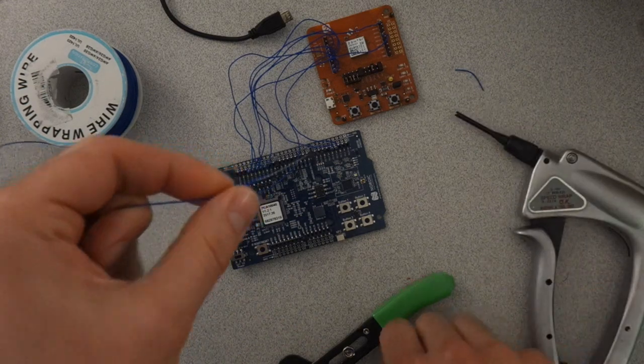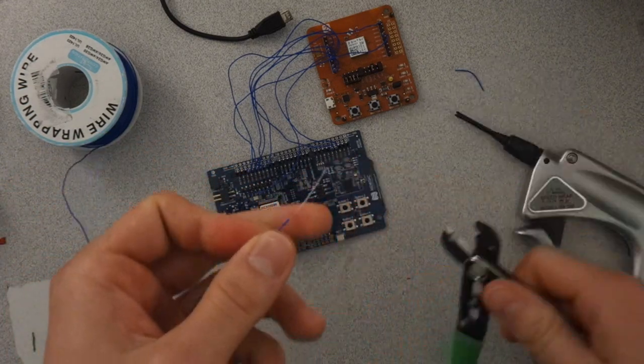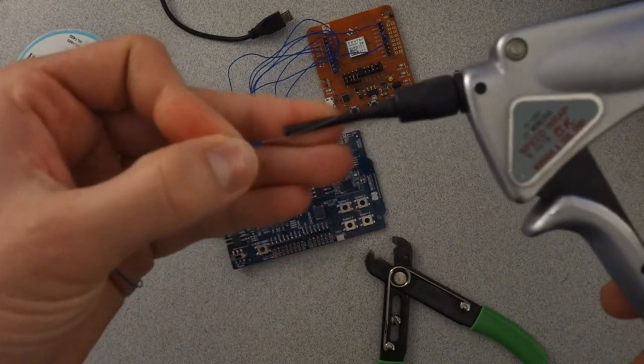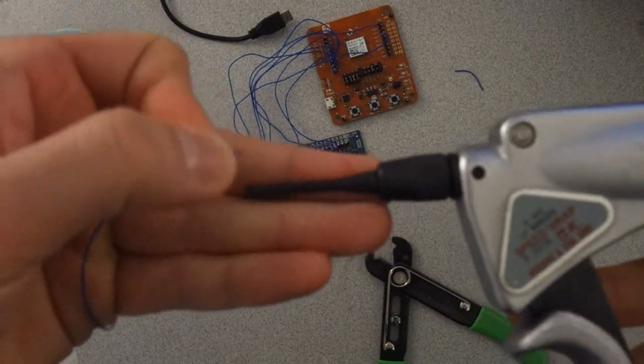First thing you just saw, I just stripped this wire about an inch, inch and a half. You don't want it to be much longer than the shaft of the wire wrap tool that you're using.